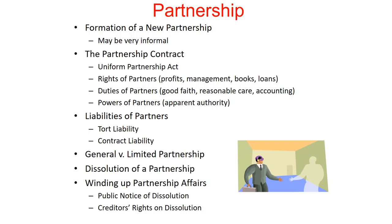The agreement should also spell out the powers of the partners — what authority do they have or not have. The Uniform Partnership Act is somewhat unusual: typically if people enter an agreement but don't agree on all essential terms, courts will not enforce it. Partnerships are an exception, because the Uniform Partnership Act is used to fill in the gaps of that agreement. So even though the partners may not have decided how to divide the profits, the Uniform Partnership Act tells them — essentially, each partner receives an equal share of the profits.